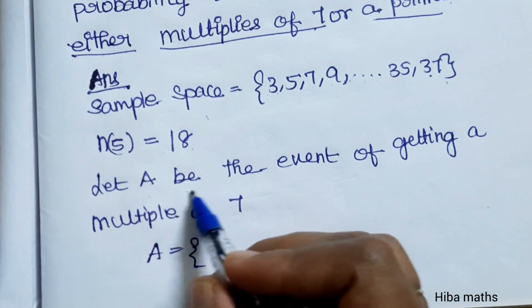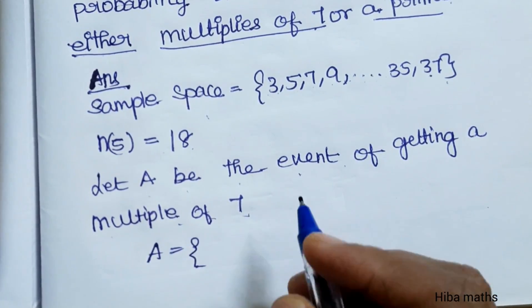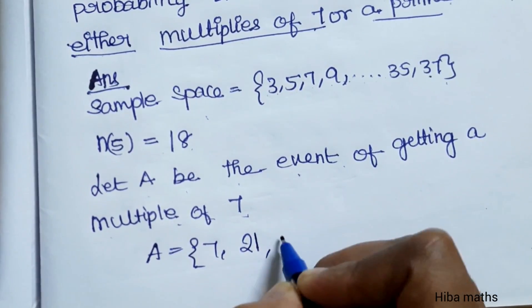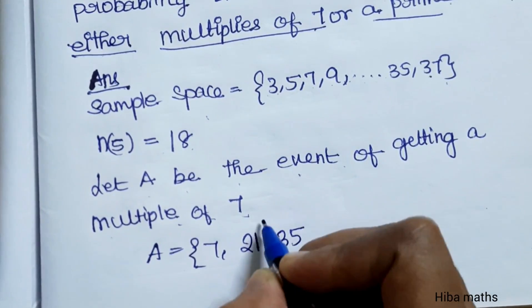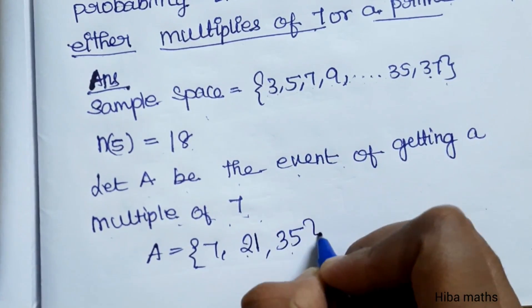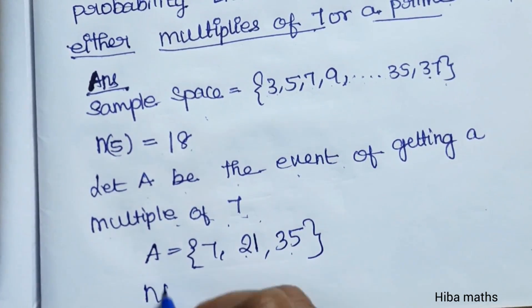Let A be the event of getting a multiple of 7. The 7 table: 7, 21, 35. 28 and 14 are even numbers, so 21 and 35 are here. So n(A) is 3.